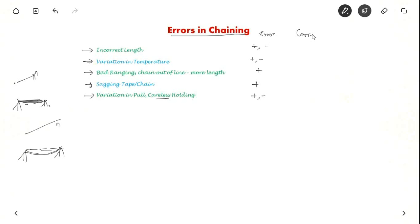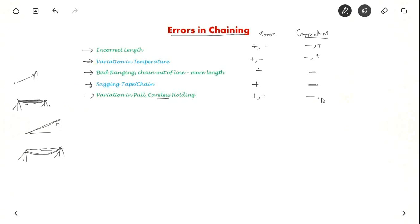The correction sign will be opposite to the error sign, so for incorrect length and temperature it will be negative or positive accordingly. For bad ranging, the correction is always negative because you measure more length — you have to subtract it to correct it. Similarly, for sagging tape or chain the correction is negative. For pull variation, the correction can be either positive or negative.